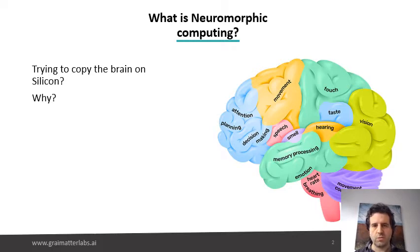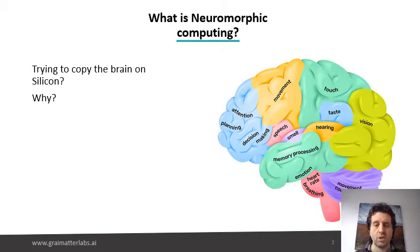So what is neuromorphic computing? Well, essentially the idea of neuromorphic computing is trying to copy what the human brain does on silicon. Now you could ask yourself why would you want to copy the human brain on silicon? Of course there's always the interest of trying to build a model of something to understand how it actually works.